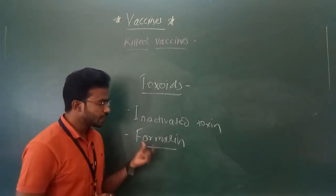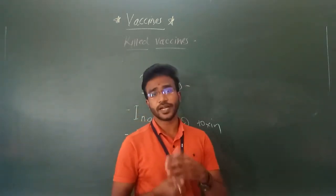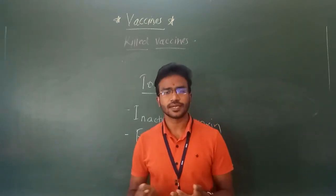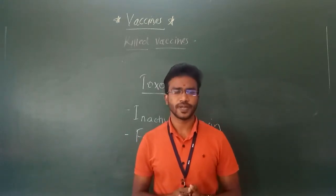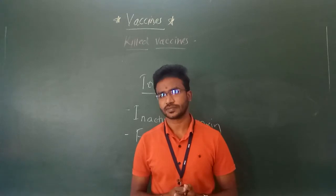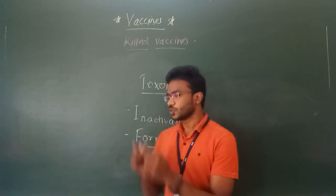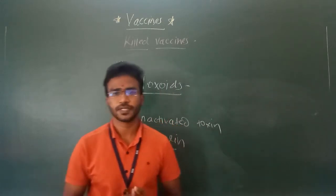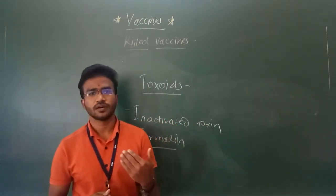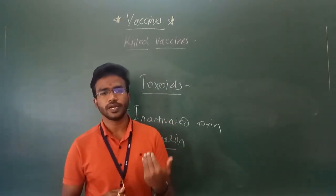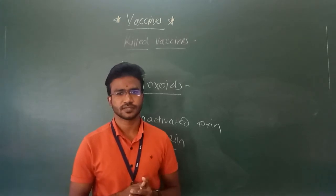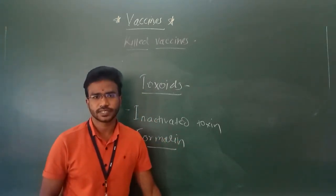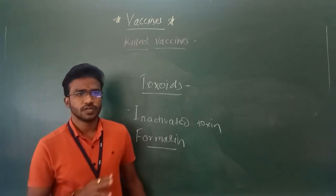Examples of toxoids include diphtheria toxoid and tetanus toxoid. These are a couple of examples of toxoids. In this lecture, we have studied various examples of heat-killed and chemically killed vaccines — both bacterial and viral — and the concept of toxoids.